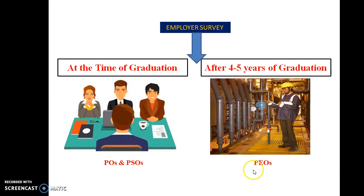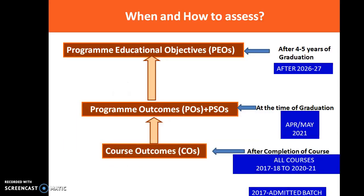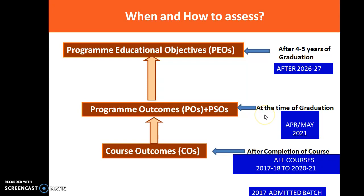For example, for the 2017 admitted batch: during the four years of study we assess COs each semester. At the time of graduation in 2021, we assess POs and PSOs. Then after four to five years — around 2025 to 2026 — we assess PEOs. The PEOs are broad long-term goals, while COs are narrow short-term statements.